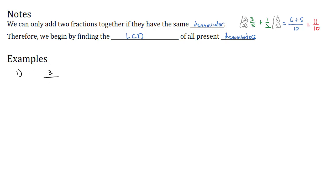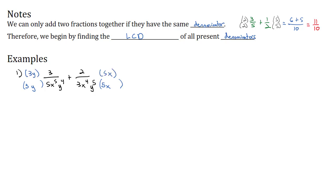Let's start simple: 3 over 5x to the fifth y to the fourth, plus 2 over 3x to the fourth y to the fifth. Looking at the two denominators, the numbers 5 and 3 each need to be multiplied by the other. Looking at the x's, we've got a 5th power on the left and 4th on the right, so we need an additional x on the right. Similarly, with the y's, we need an additional y on the left so that they're all y to the fifth.